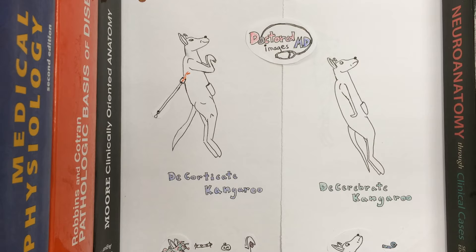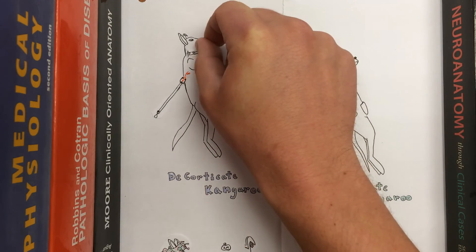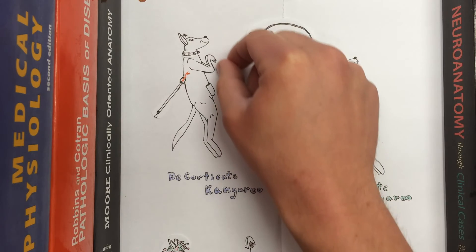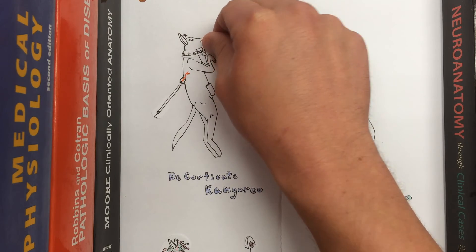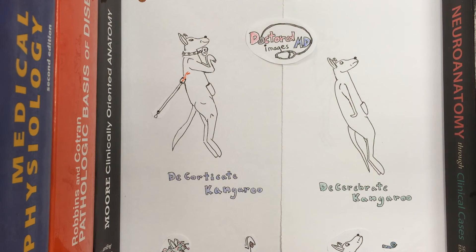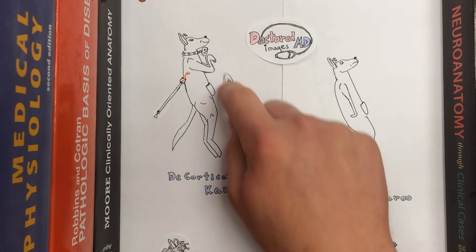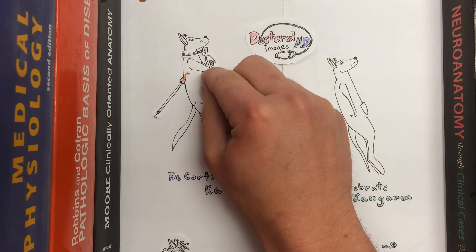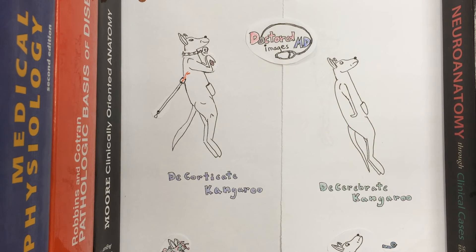The flexion in the arms occurs because the red nucleus in the rostral midbrain is still intact. This means the lesion occurs above the red nucleus, leaving the rubrospinal tract intact. This is represented here in two ways: the first is this ruby-studded collar this happy decorticate kangaroo is wearing, and this RM name tag to remind you that it is the rostral midbrain where the red nucleus is. This happy kangaroo is also clenching this red ruby tightly to his chest to remind you it is the rubrospinal tract that is causing the arms to be in the decorticate position.